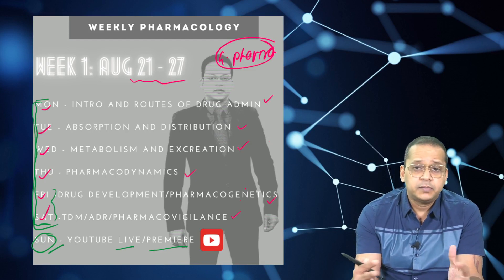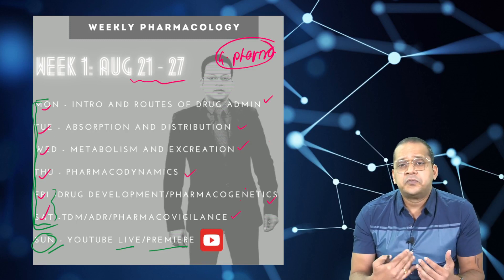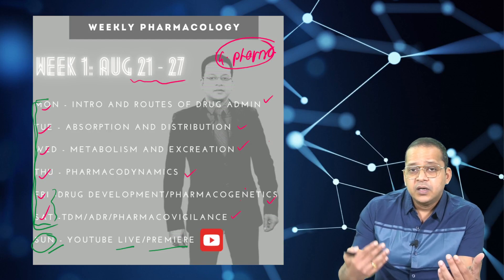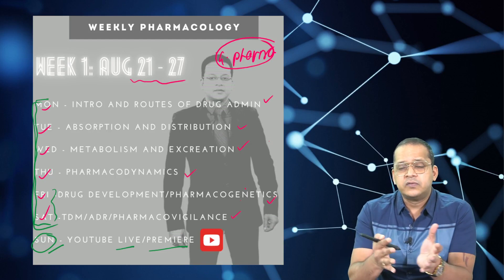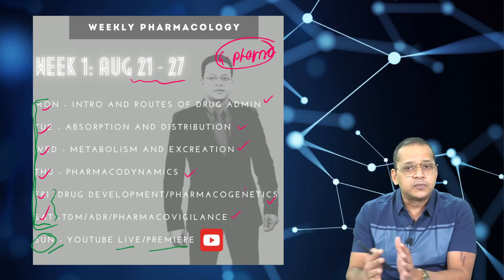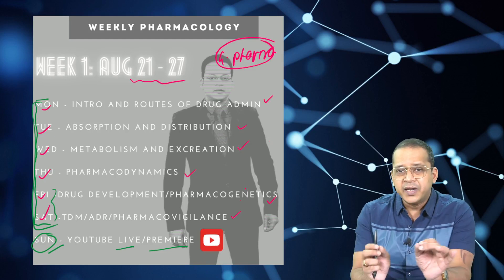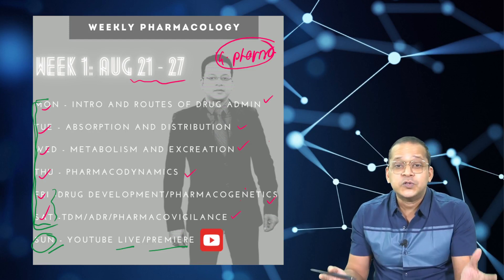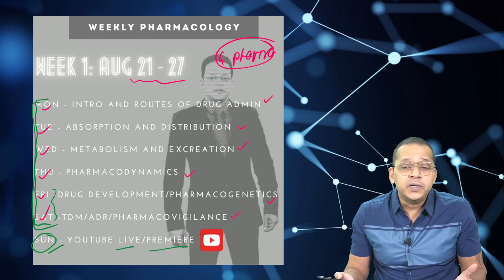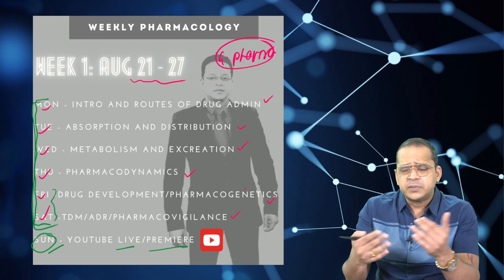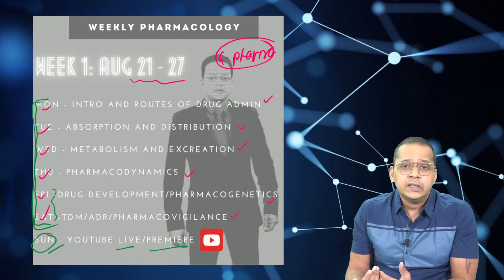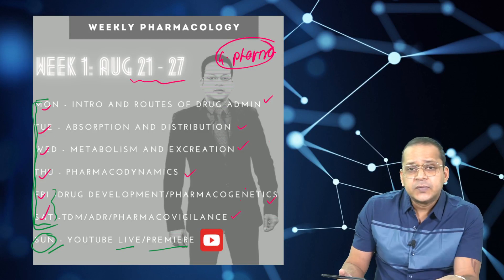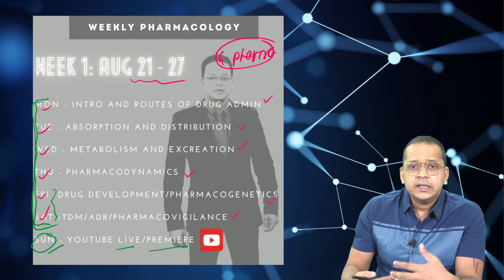Category 3 students are those who have not yet started pharma at all. If you were weak in pharma from your undergraduate days, you can follow this weekly pharmacology schedule alongside whatever platform or teacher you're using. I'm just giving you a breakdown of the timetable to keep you on track, so you complete pharma gradually — not in a bolus fashion like cramming it all in 10 days. Dividing it over two and a half months improves retention.